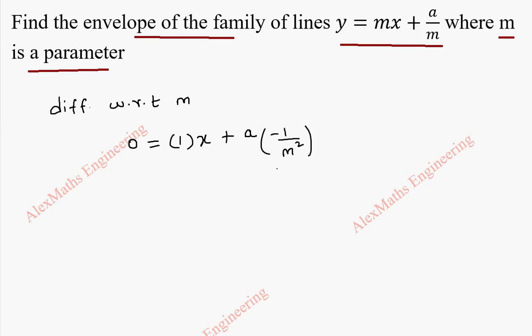From this, we can take this term to the other side, so it is a/m² = x. We have to find what is m and substitute it in the given curve. If we cross multiply, this will become a = xm² and a/x will be our m². But we need m, so a/x within the root will be our m.